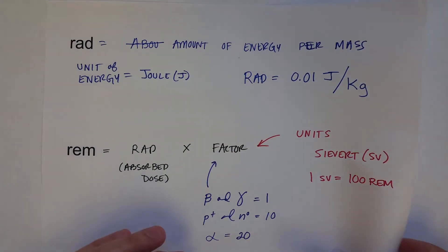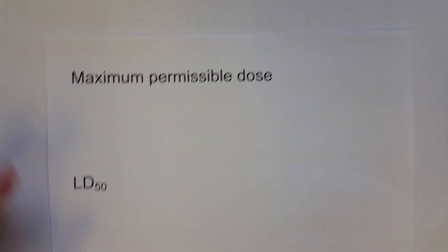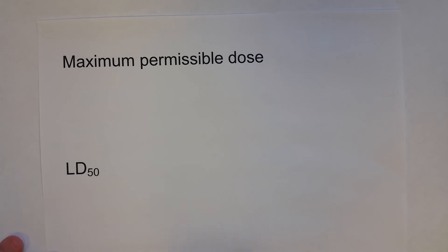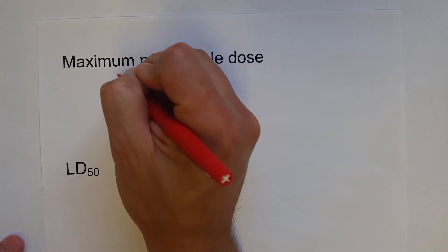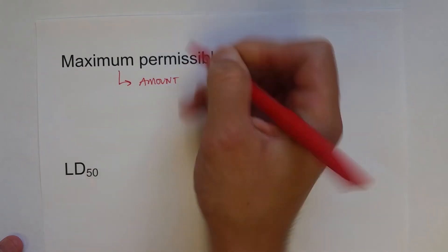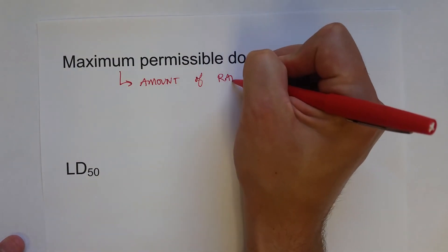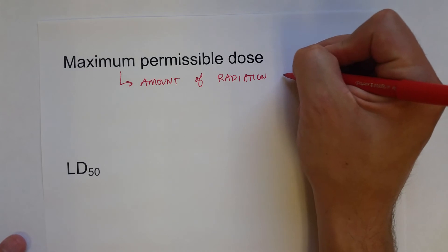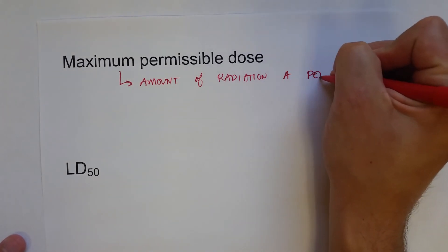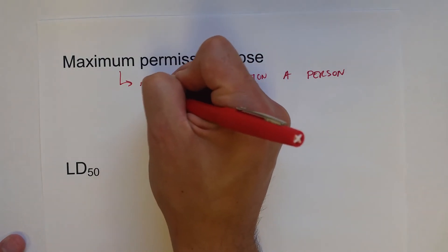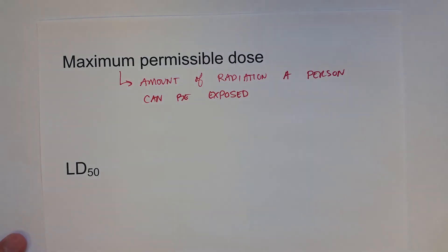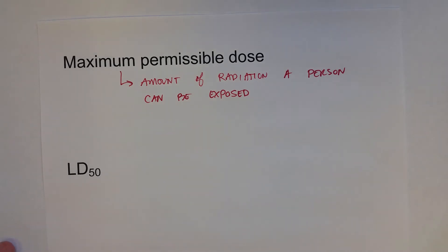And then to finish this off, we can talk about things that we use in toxicology and health fields to declare how safe or unsafe these levels of exposure are. The first one is the maximum permissible dose, which is the amount of radiation that someone is allowed to legally be exposed to.